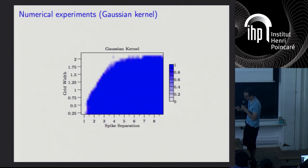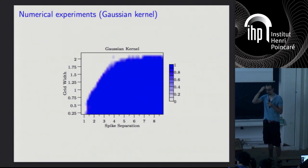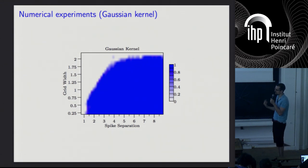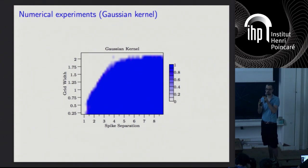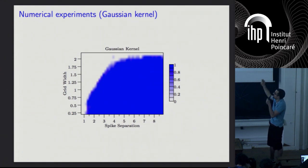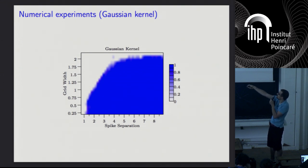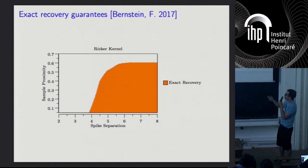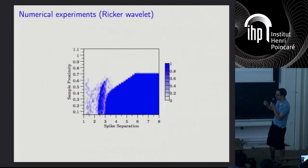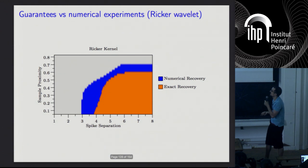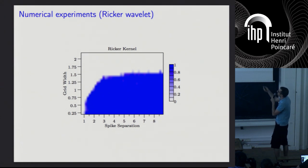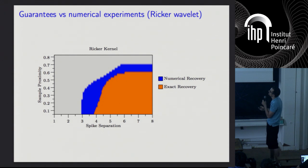We also validated on a uniform grid. On a uniform grid, the sample proximity is half the grid width, since a spike could land right between two samples. The spike separation we prove corresponds roughly to this regime, and the results align well with both the Gaussian and Ricker kernels.